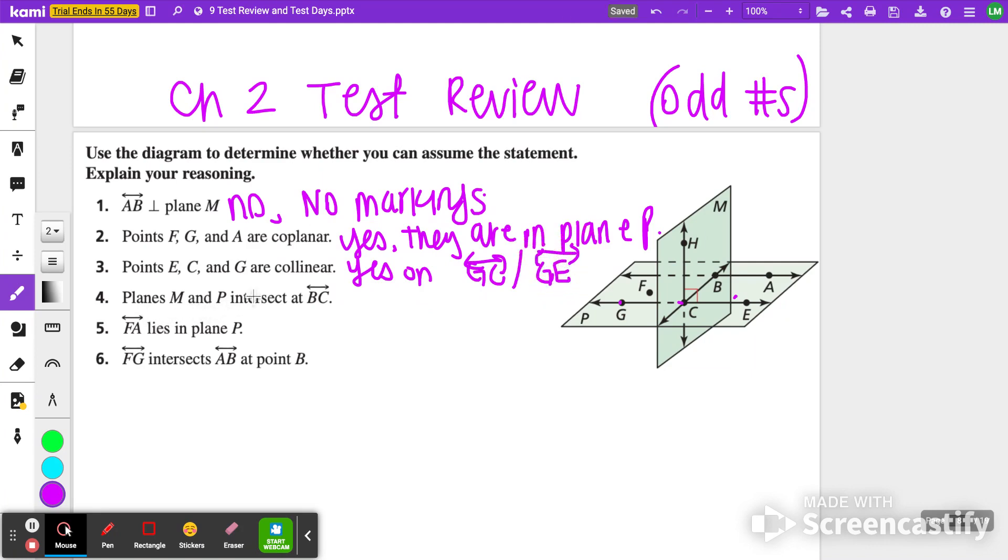Number four, planes M and P intersect at BC. Yes, that intersection is indicated. So here is plane M, here is plane P, and then BC has that perpendicular marking. It's also being represented by this steady line of CB. Line FA lies in plane P. This one would also be yes. Here is line FA, and this is on plane P. The last one, FG intersects AB at point B. This one is no. F and G are not actually connecting, so it would not be considered intersection of AB.